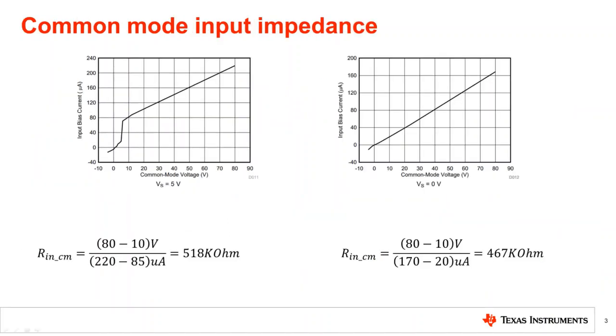Input impedance is directly related to input bias current. For this reason it would be redundant to list this in the specification table in addition to IB. We'll now take a deep dive and inspect the typical IB curves. By the end of this video we will be able to estimate the common mode and differential mode input impedances. Knowing the common mode and differential input impedances helps us understand their potential to impact the system that the CSA is used in.